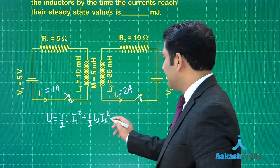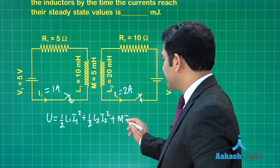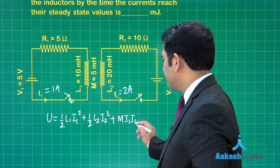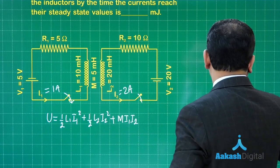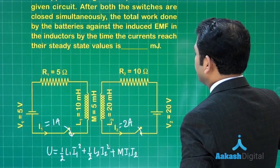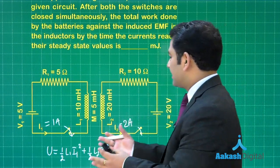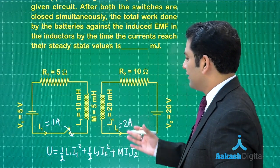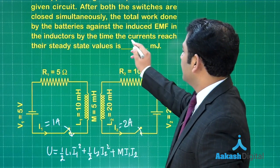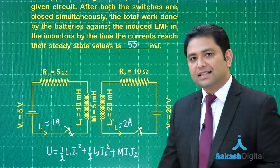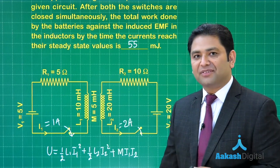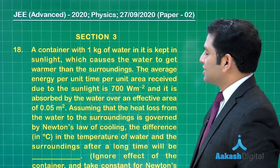So quite obviously you can calculate that value, and you need to report it in millijoule. So keep all the inductance and mutual inductance in milli henry itself. You are going to get 55 millijoule as the work done by the battery against the induced emf.